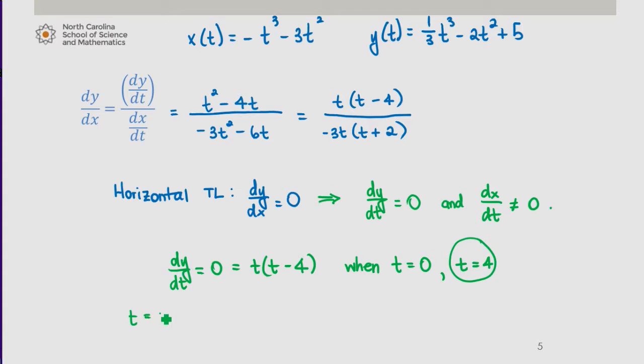When t is 4, our coordinate, if we substitute t = 4 into our original equations, we get (-112, -5⅔).